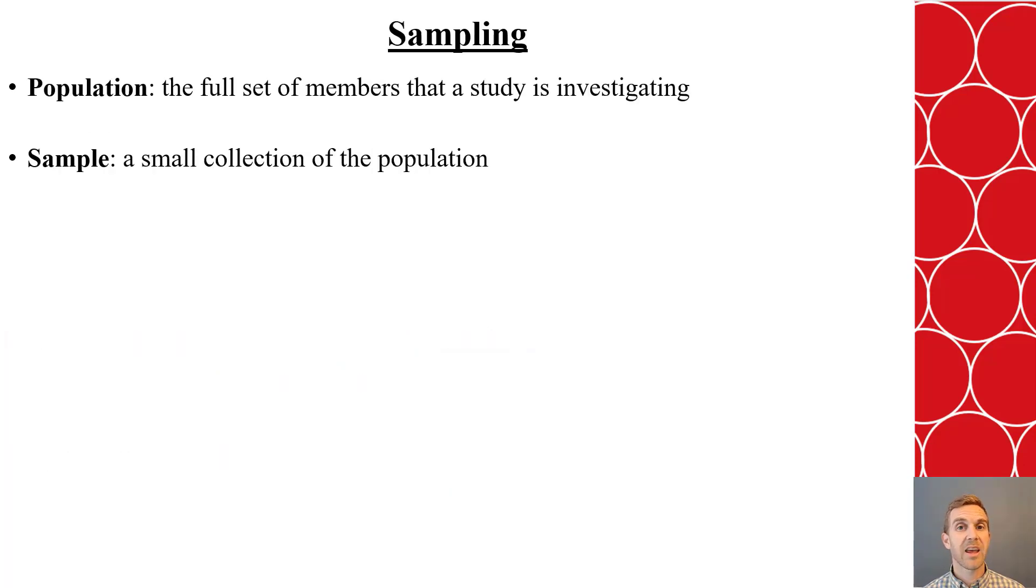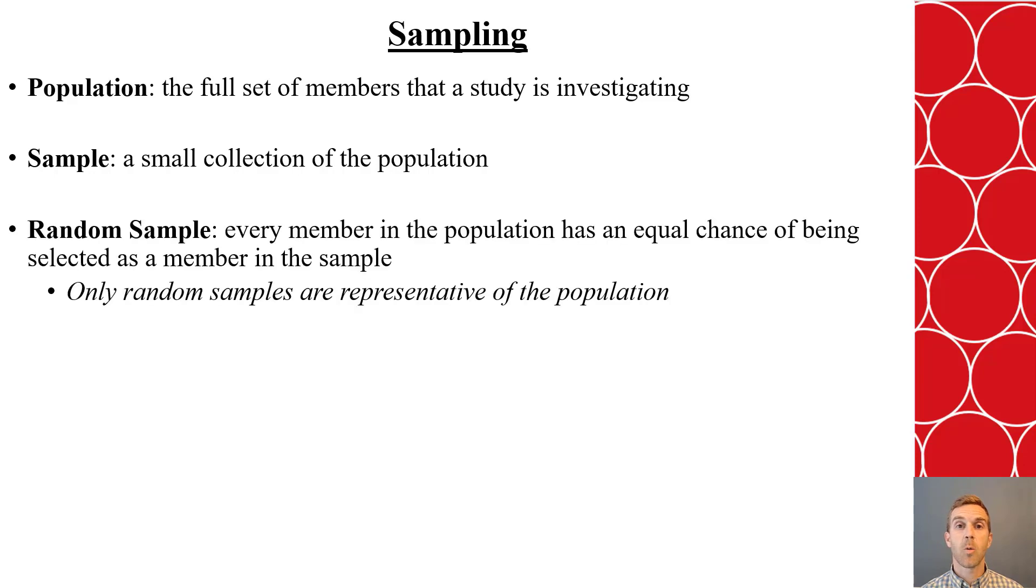Now, as we do our investigations and experiments, we want to understand what is the population so that we can get appropriate samples. The population is the full set of members that a study is investigating, whereas a sample is a subset or a small collection of that population. When we are doing our sampling, we want to make sure that we are running a random sample and not a convenient sample. A random sample guarantees that all members of the population have an equal chance of being selected to be part of the sample. This will help it be representative of the entire population, as long as the sample is large enough.